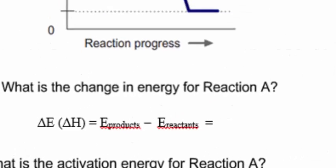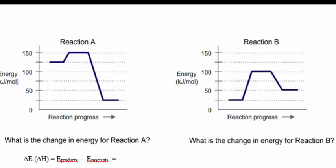So in the energy diagram, one needs to find the energy of the reactants and the energy of the products. In these energy diagrams, the energy of the reactant is where the curve begins. So with reaction A, the energy of the reactants is 125 kilojoules per mole.